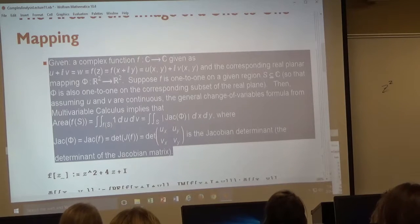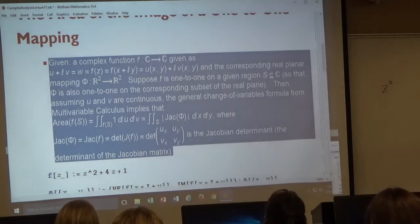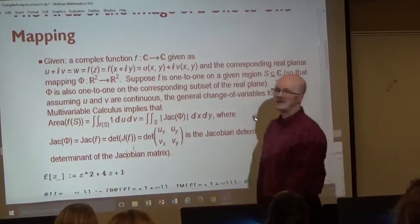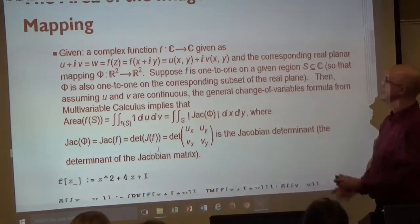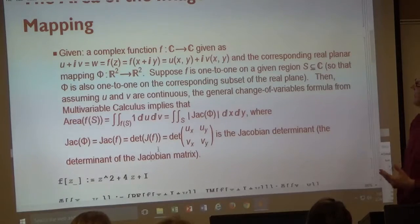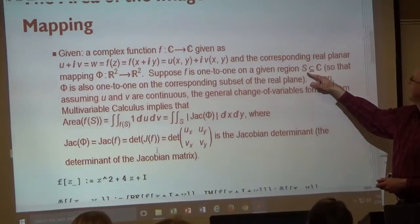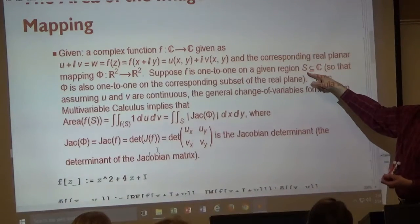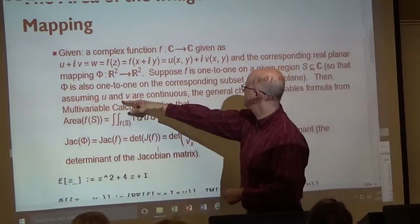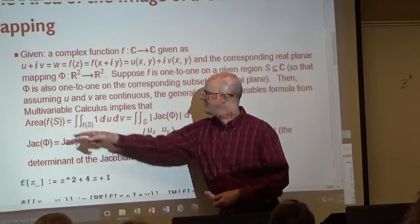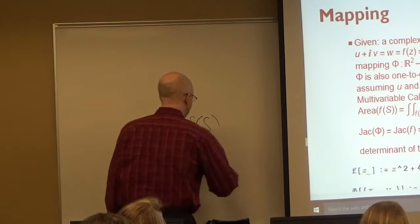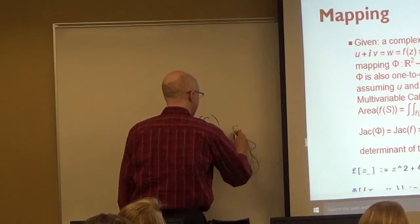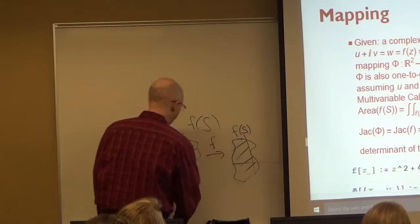We have a complex mapping, which we can think of as a real planar mapping. F is the complex mapping, capital T is the corresponding real planar mapping — think of it either way. The goal is to find the area of the image of some set S, some region — maybe a square, maybe a rectangle, maybe a disk. You're looking at the image of it. If U and V are continuous, you can find the area of the image; F of S represents the image.